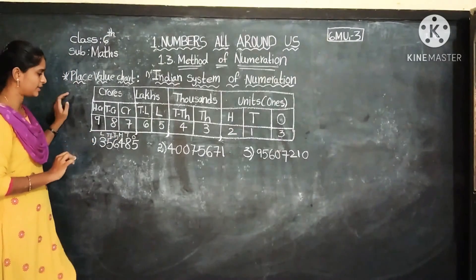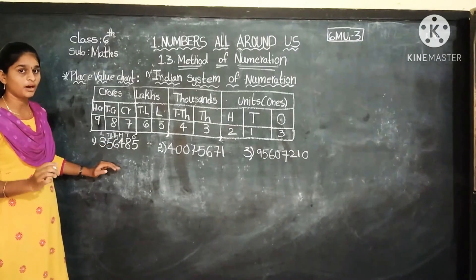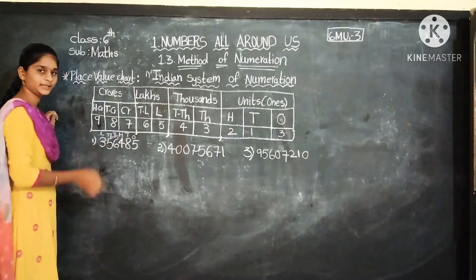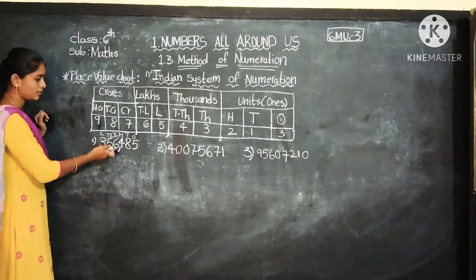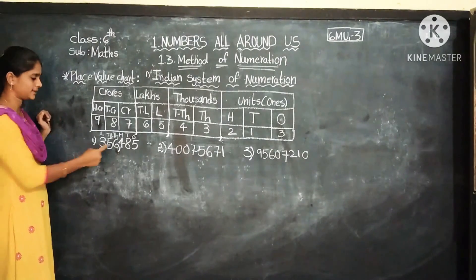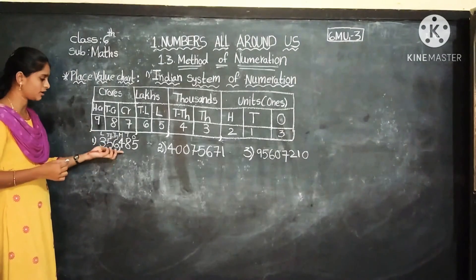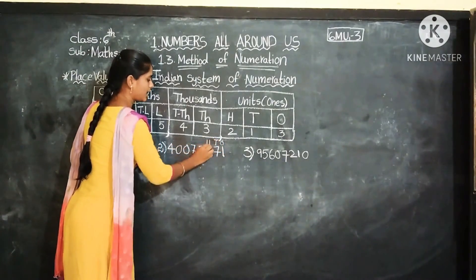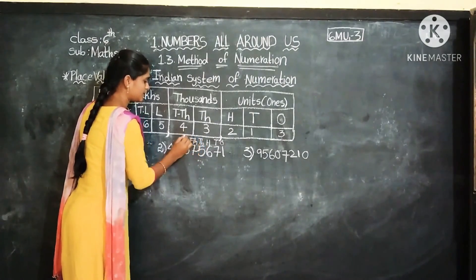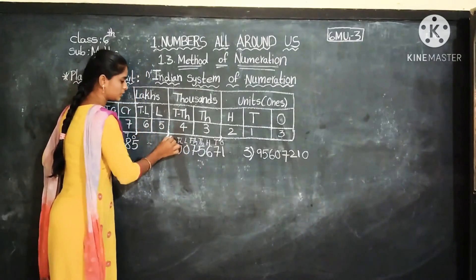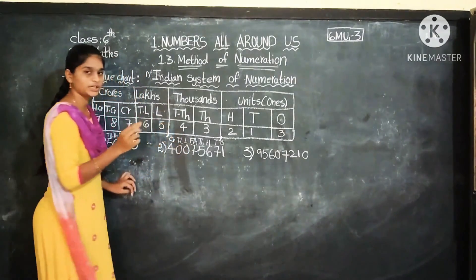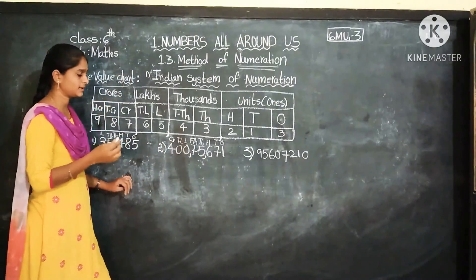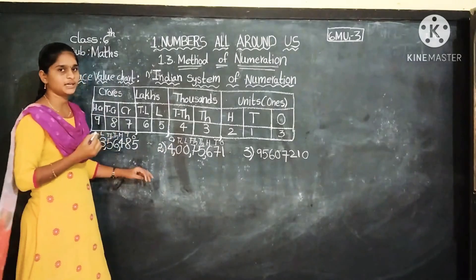For example, in the first example we put the comma after three digits from the right, then the second comma after two more digits. In the second example with more digits, we place commas after three digits, then after two digits, then after two more digits.